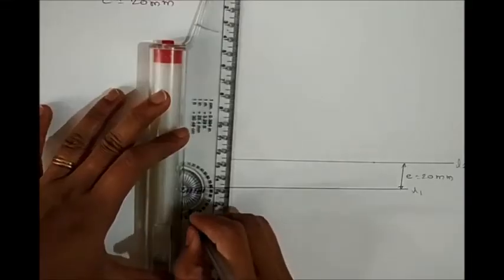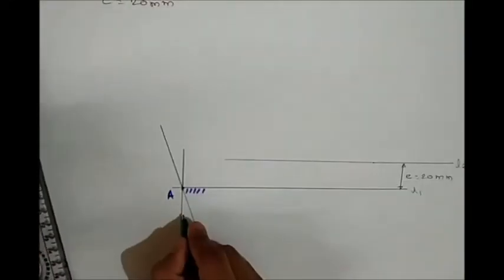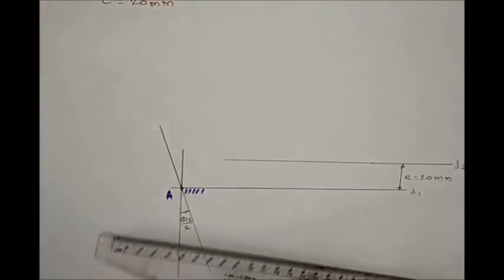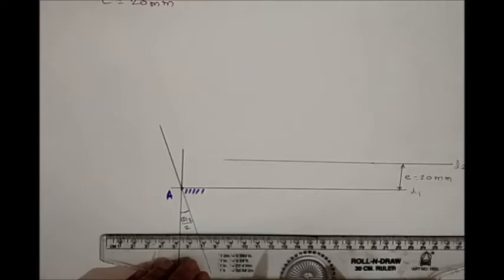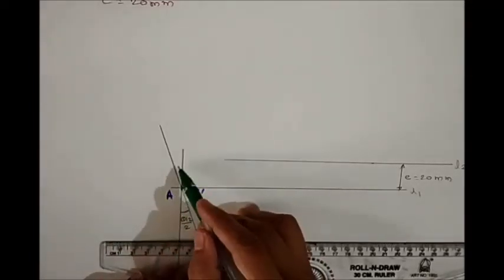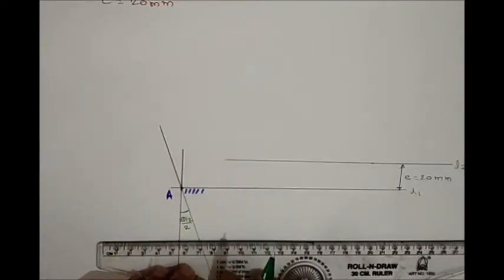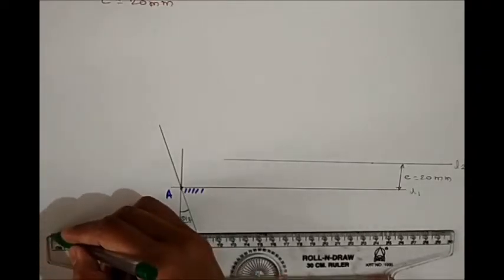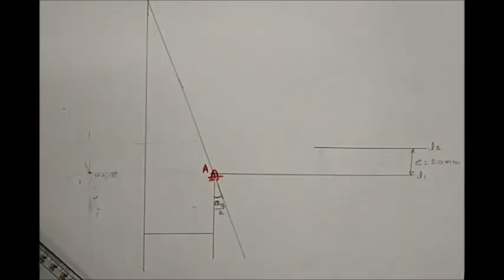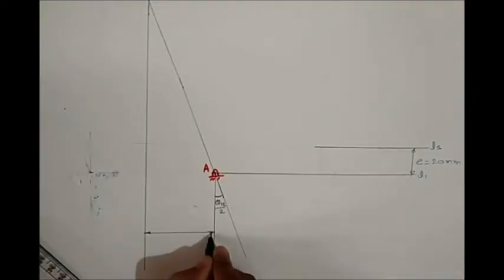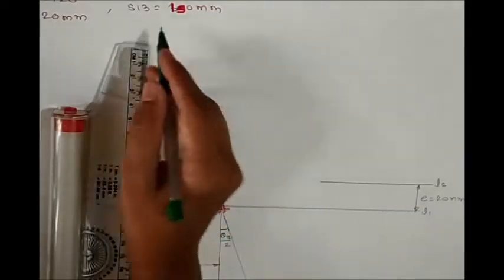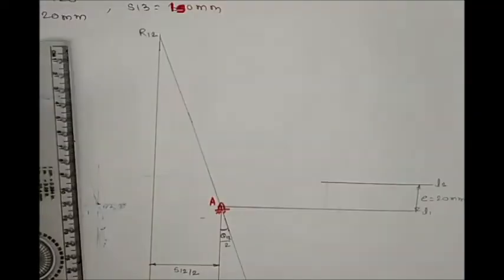Mark the rotation angle theta 1-2 by 2. Then take a horizontal distance from the vertical reference line equal to s 1-2 by 2. Draw a vertical line at that horizontal distance, which will intersect the previous angled line at point R12. This is your first relative pole position.